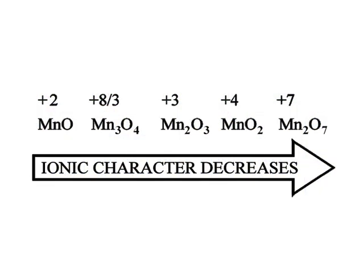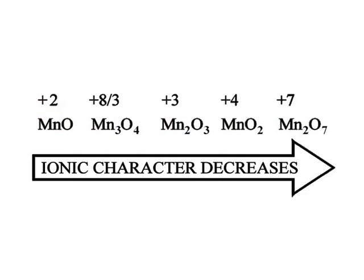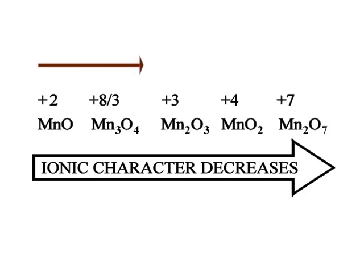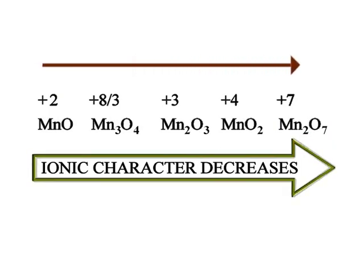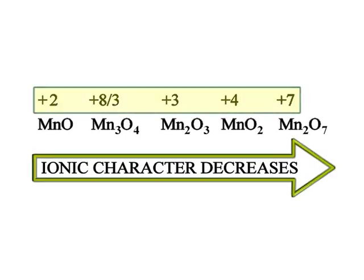The image shown depicts various oxides of manganese. In all these oxides, the oxidation states of manganese are depicted. It is shown that in MnO, manganese has an oxidation state of plus 2, while in Mn₂O₇ it shows a plus 7 oxidation state. From Mn₂O to Mn₂O₇, the ionic character decreases as the oxidation number increases.